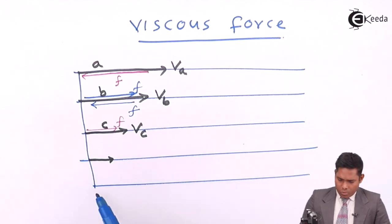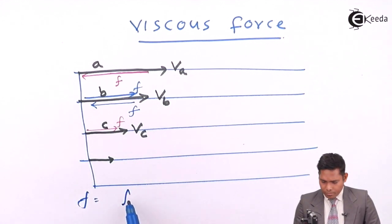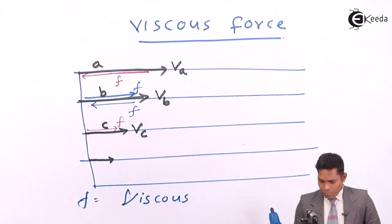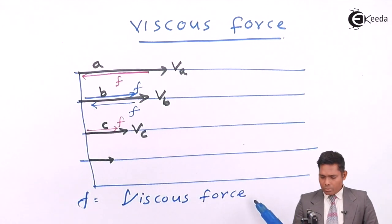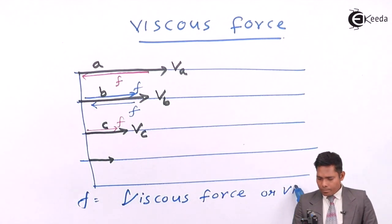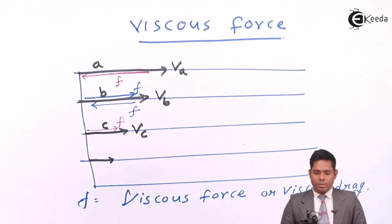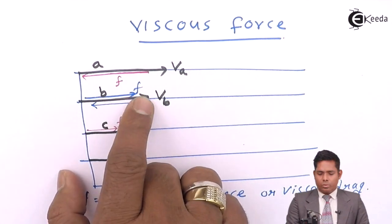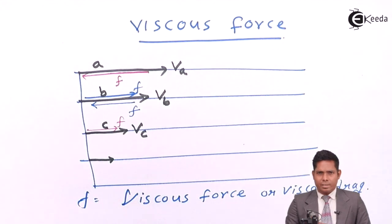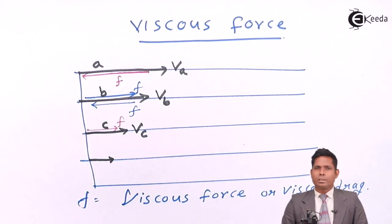So what is the viscous force? Due to different speeds of the layers, adjacent layers oppose the relative motion. The internal tangential forces appearing because of this are called viscous force.